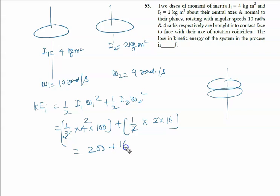Before calculating the final energy, we require the final angular velocity. According to conservation of angular momentum: I₁ω₁ + I₂ω₂ = (I₁ + I₂)ω, where ω is the final rotational speed. So 4×10 + 2×4 = (4+2)ω. That's 40 + 8 = 6ω, so ω = 8 rad/s.